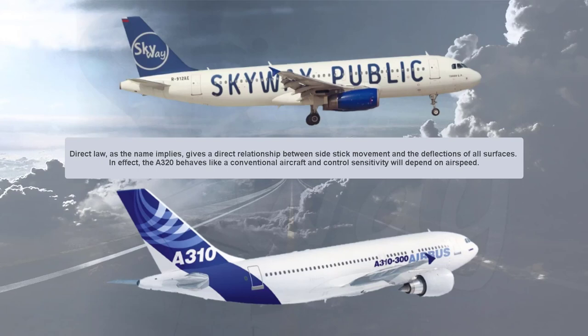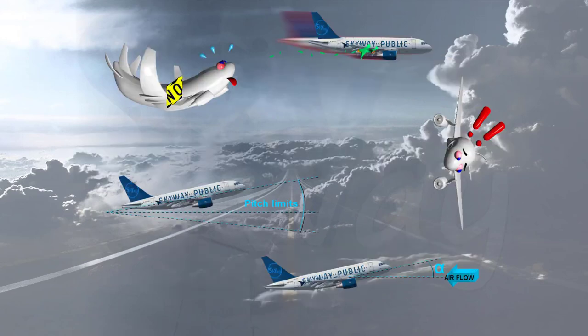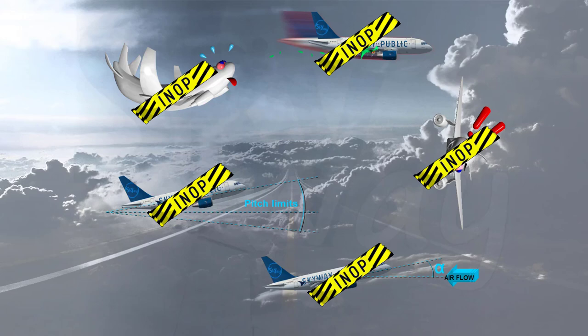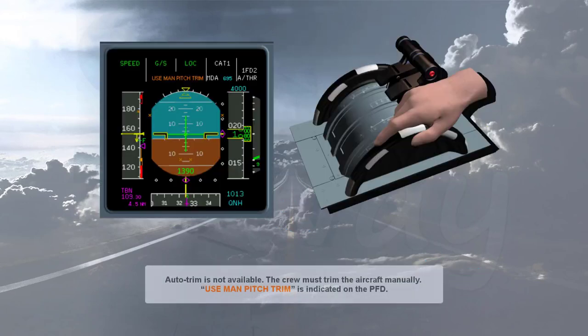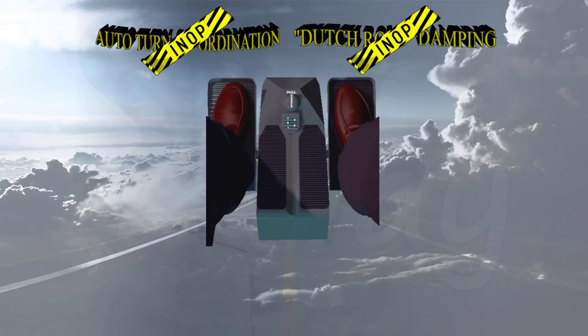Direct law, as the name implies, gives a direct relationship between side stick movement and the deflections of all surfaces. The A320 behaves like a conventional aircraft, and control sensitivity will depend on airspeed. In direct law, there are no protections available, although stall and overspeed warnings will sound at the appropriate speeds. Auto trim is not available and the crew must trim the aircraft manually — 'Use manual pitch trim' is indicated on the PFD. Auto turn coordination and Dutch roll damping are also lost. All yaw control in direct law is through the rudder pedals.